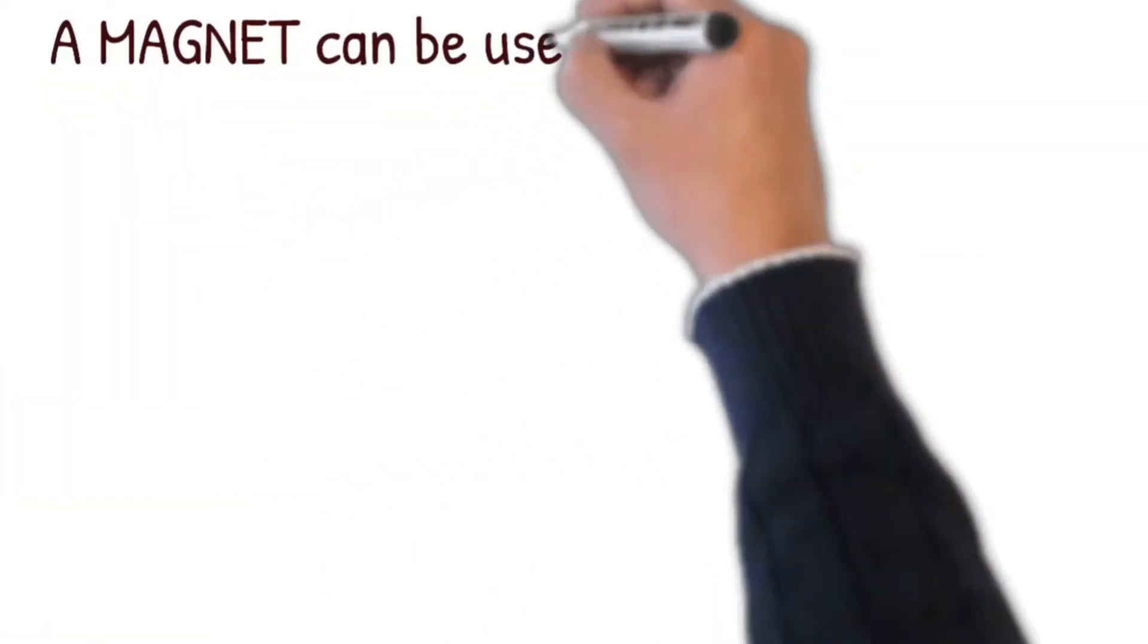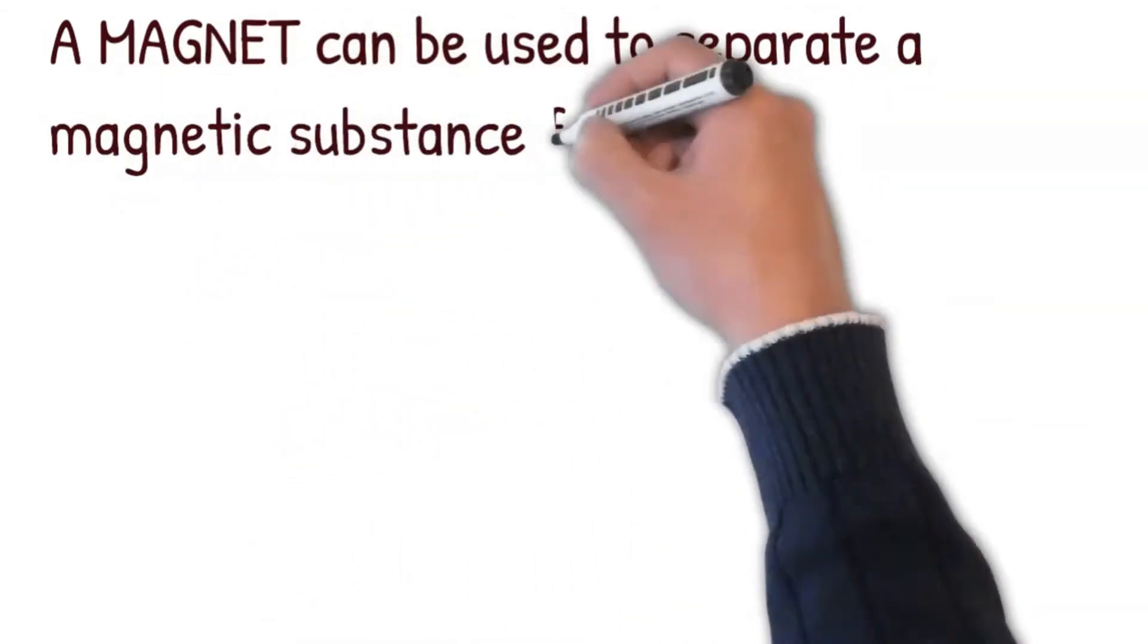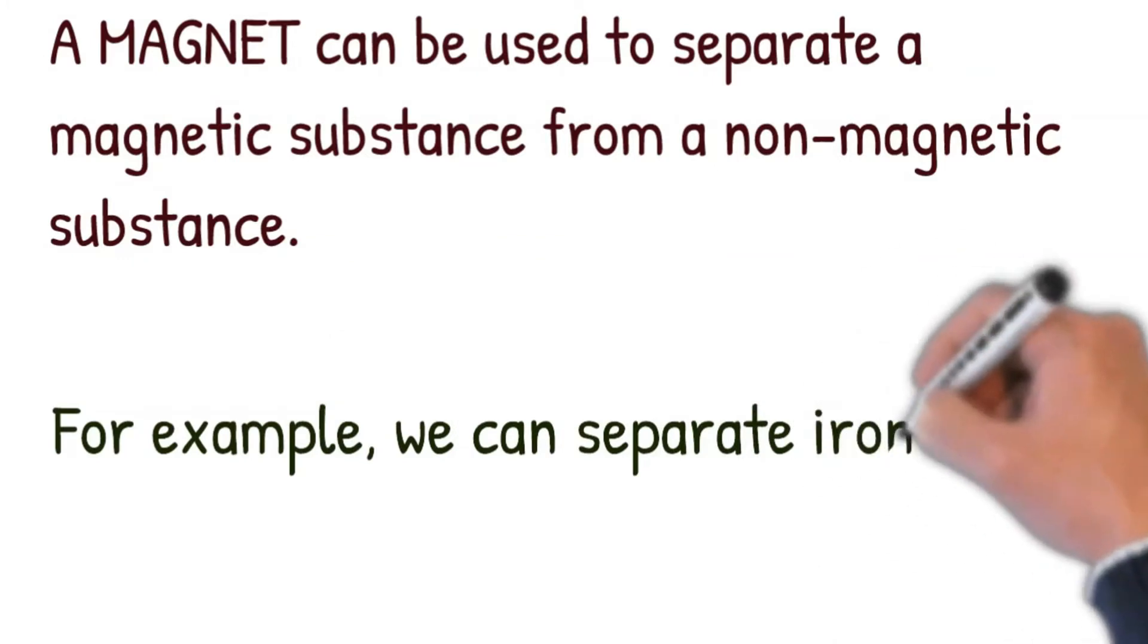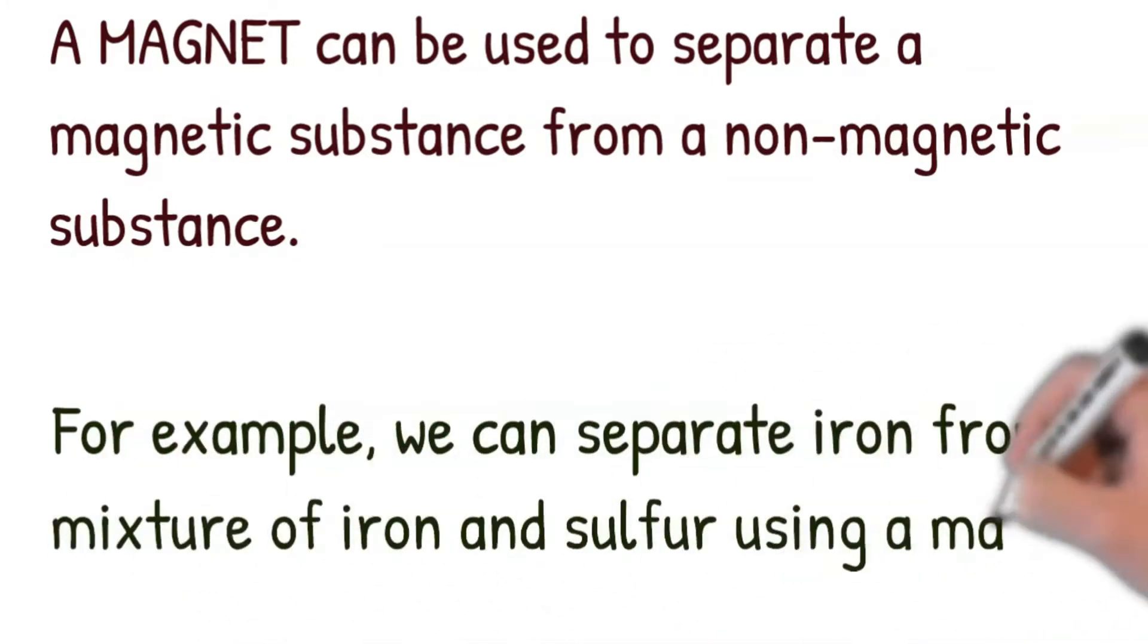A magnet can be used to separate a magnetic substance from a non-magnetic substance. For example, we can separate iron from a mixture of iron and sulfur using a magnet.